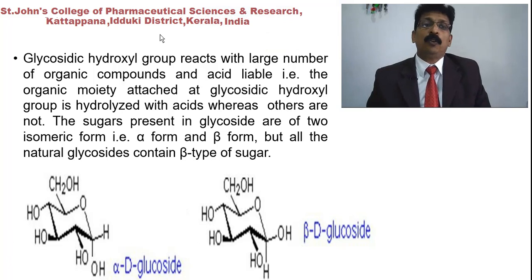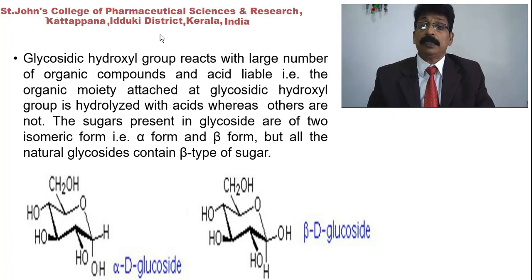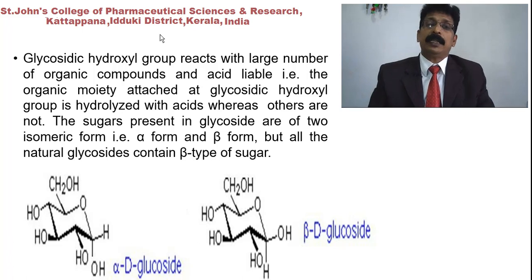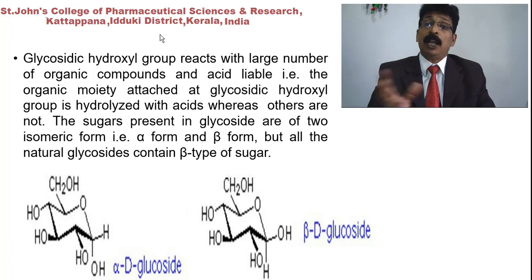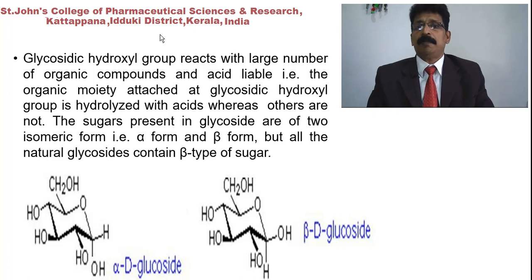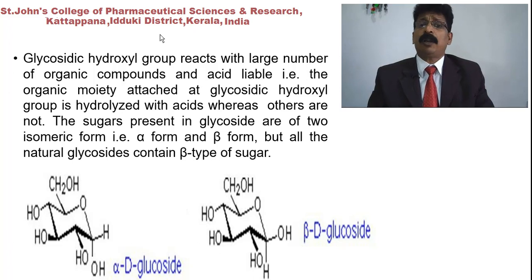Regarding the glycosidic hydroxyl group: the aglycon moiety is attached to the sugar molecule via an OH group. It takes place in an anomeric form — either alpha form or beta form. These isomeric forms are determined by the position of the OH group above or below the plane of the ring, which decides the type of glycoside.